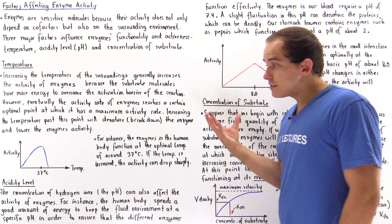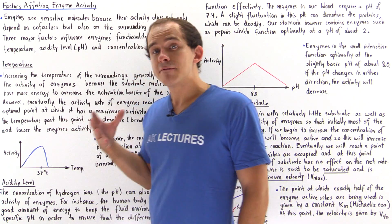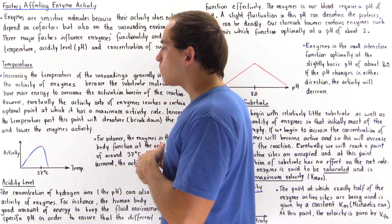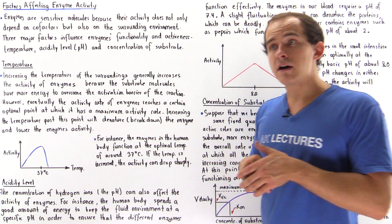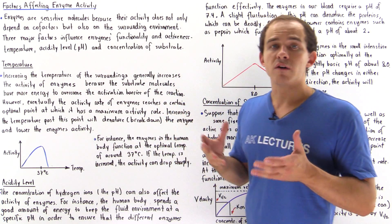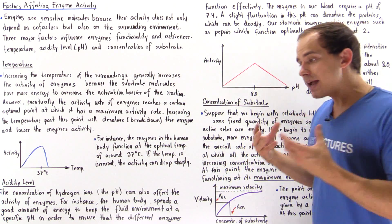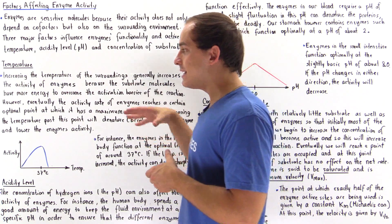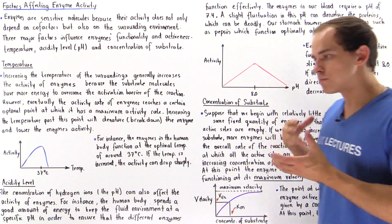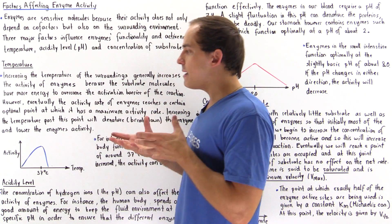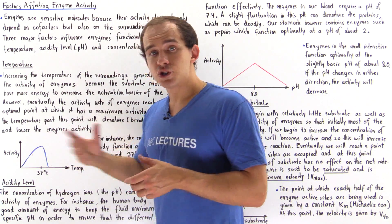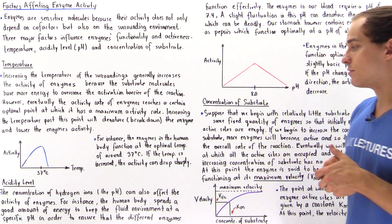This is basically why it's dangerous to have a fever — when our body temperature increases, we can damage our proteins and enzymes. Ironically, this is also a mechanism by which our body kills off bacterial cells. When we're sick, our body increases its temperature, causing the proteins in bacterial cells to denature, decreasing the activity and functionality of enzymes found in those bacterial cells.